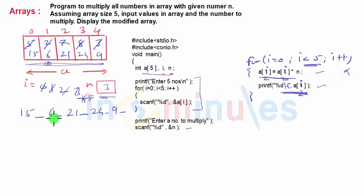And we got output as 15, 6, 21, 24, 9 as a final resultant array. Then obviously we'll put one more curly bracket to finish main.